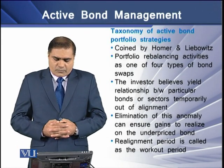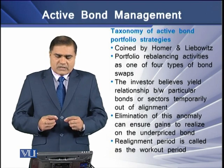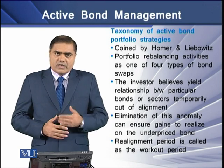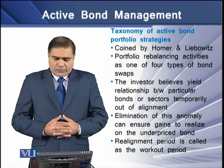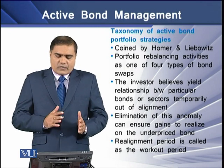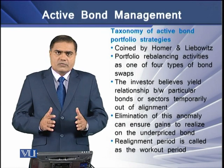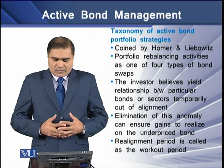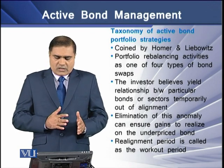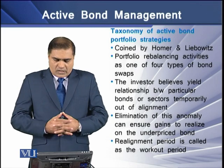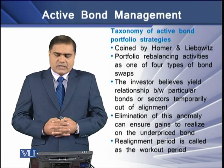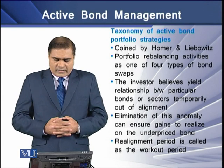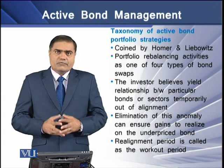The taxonomy of active bond portfolio strategies was coined by Homer and Lee Bobbitts. They identify portfolio rebalancing activities as one of four types of bond swaps. Investors believe yield relationships between particular bonds or sectors are temporarily out of alignment, and the elimination of this anomaly can ensure gains by realizing value in underpriced bonds. This realignment period is also called the workout period.